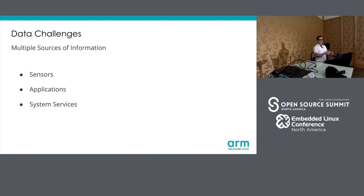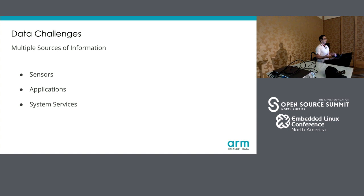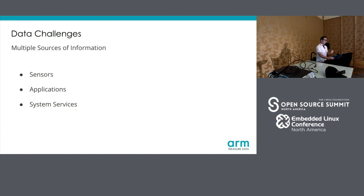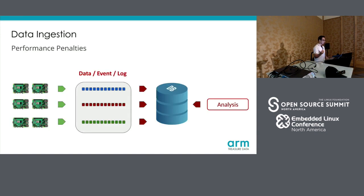There are quite a few challenges here because data comes from sensors, and can come from applications and system services. Applications can be your normal application running on the device — a system service. If you're running embedded Linux, you can get data from systemd, from the kernel, from the proc file system. And all that information at some point you need to correlate, because you want to say all this data came from this sensor, from this kernel — maybe it's a bug or an application not working properly.